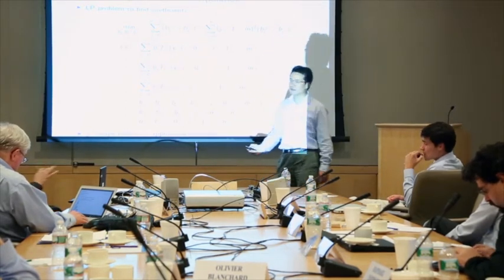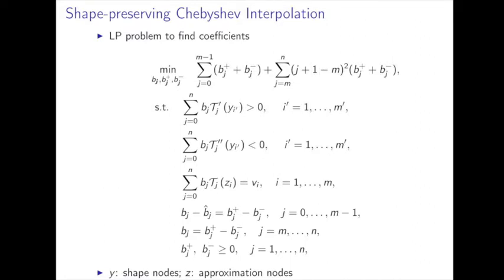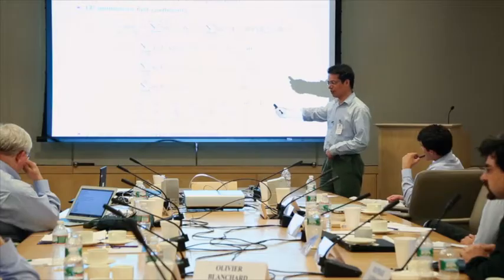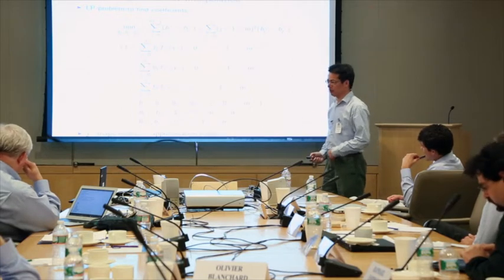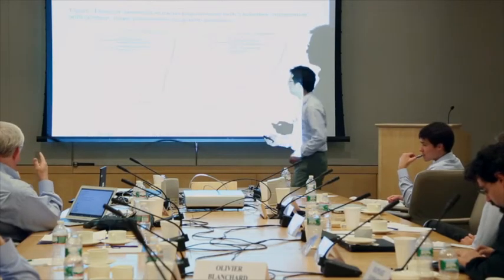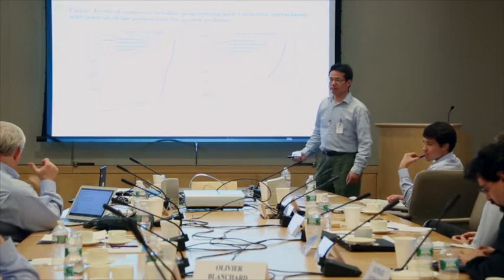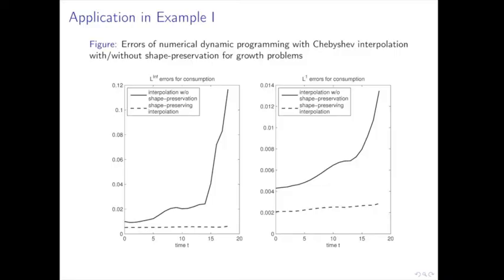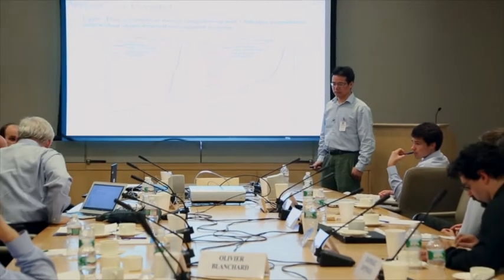You choose a bunch of nodes and impose restrictions there. Why wouldn't those just be the same as the approximation nodes? They could be the same, but you can also choose other points. You typically need more shape nodes. The pure problem is what we call semi-infinite programming — you have an infinite number of restrictions. In practice, at large enough N, sets of endpoint nodes can be equally good, but typically more nodes are needed.